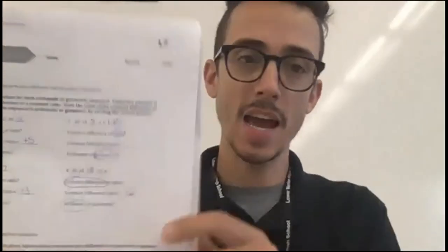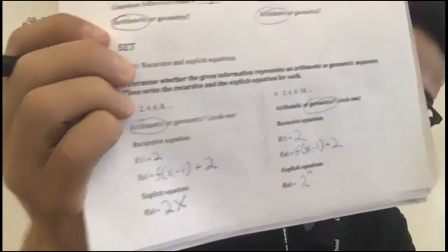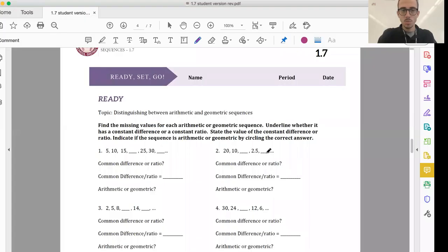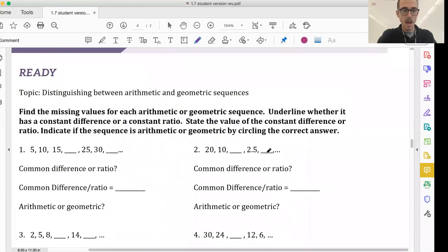Hey, Integrated All-Stars. We're going to be taking a look today at the 1.7 Ready, Set, Go. Let's go. Talking about recursive formulas, arithmetic sequences, geometric explicit equations, all that good stuff. I hope you're having a great day. Let's get into it. 1.7 has the Ready, starting with distinguishing arithmetic and geometric sequences.